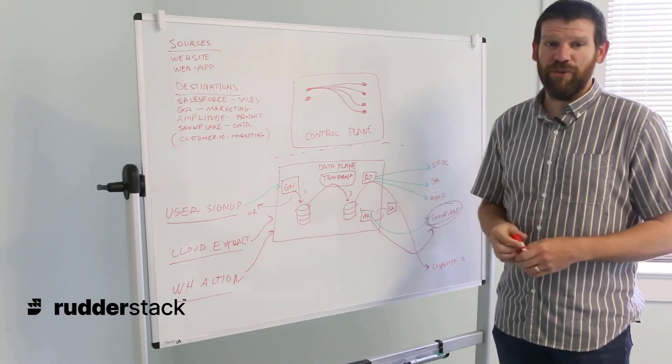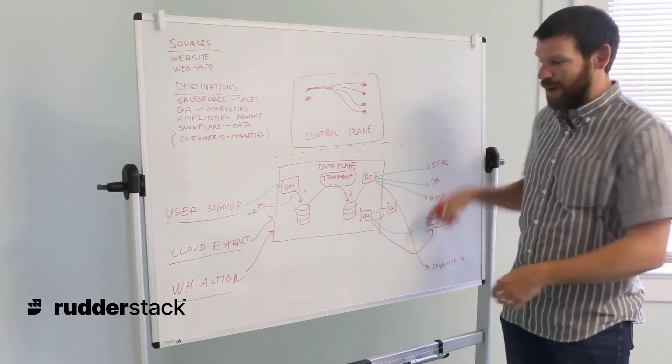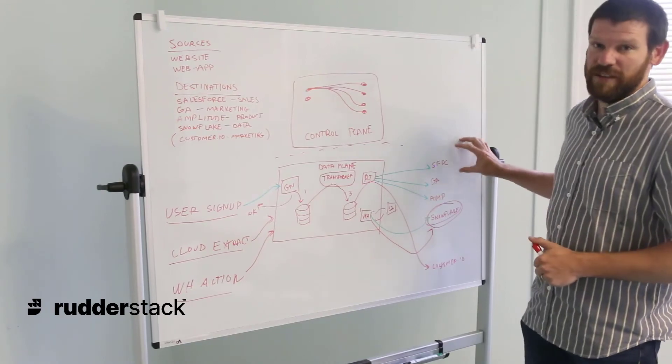handling first touch attribution, calculating lead scoring. Really anything you would do on top of your data warehouse can now be piped back through Rudderstack through Warehouse Actions and then synced into these downstream tools.